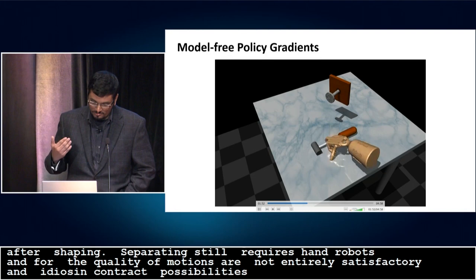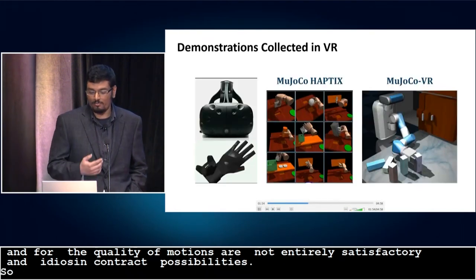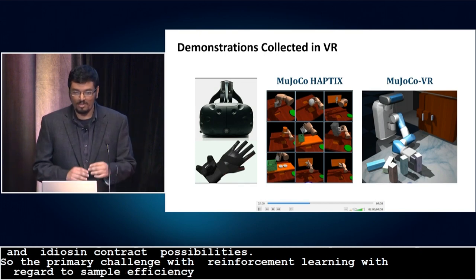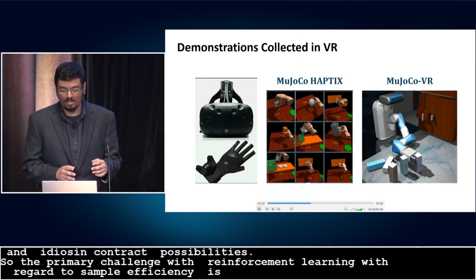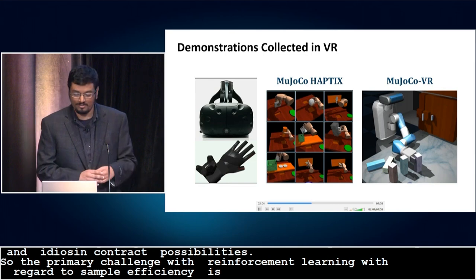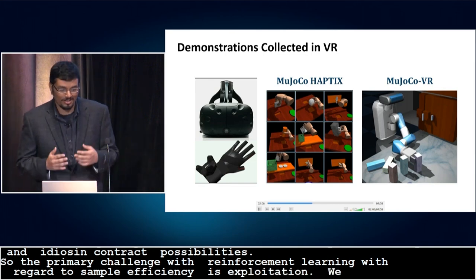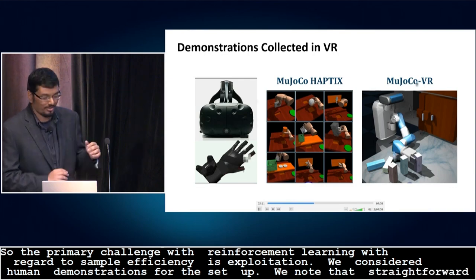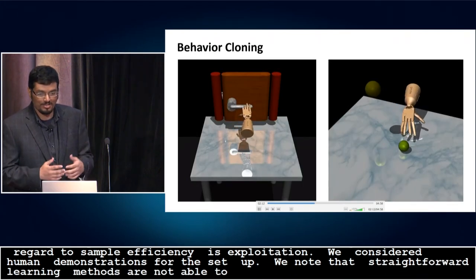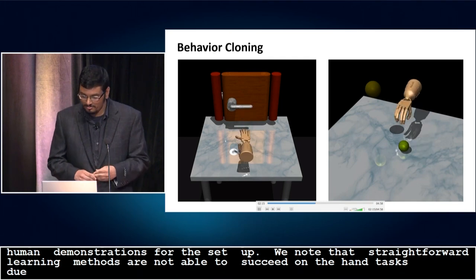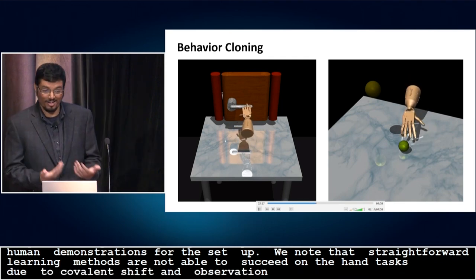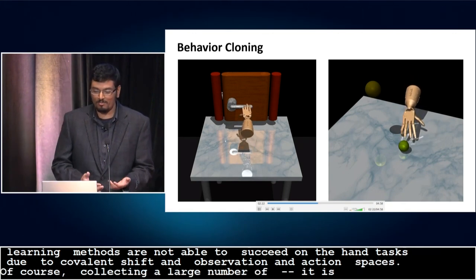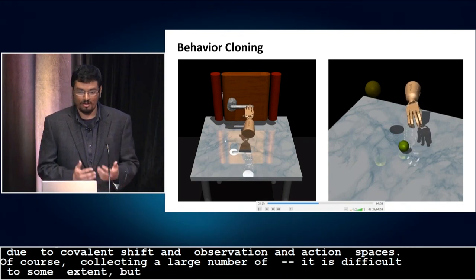The primary challenge with reinforcement learning with regard to sample efficiency is exploration. To circumvent that problem, we collect a small number of human demonstration data using the MuJoCo virtual reality setup. We note that straightforward imitation learning methods such as behavior cloning are not able to quite succeed on the hand tasks due to covariate shift and high-dimensional observation and action spaces. Collecting a large number of demonstrations could alleviate these difficulties to some extent, but it's not a practical and scalable approach since collecting demonstrations is often difficult.